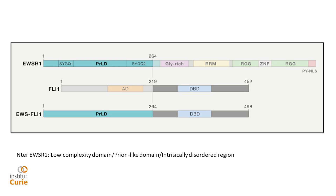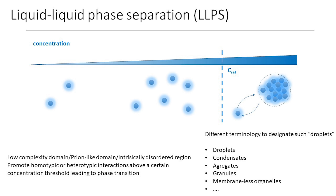This kind of low-complexity domain is a matter of a lot of investigation nowadays — it is something well known in physics and more recent in biology. The principle is that these domains can induce what is called liquid-liquid phase separation: when you increase the concentration of the domain, at some point there is a tendency to aggregate and form droplets in the liquid. EWS has this kind of domain — at sufficient concentration you favor homotypic and heterotypic interactions and you have this kind of droplets. This is important for the biology of what EWS-FLI1 is doing.